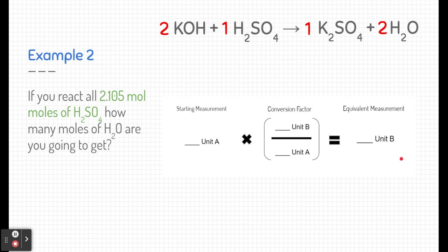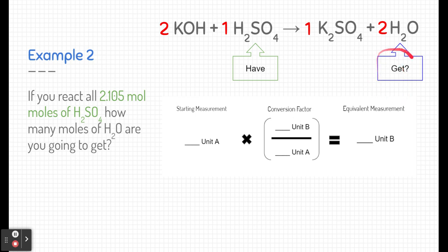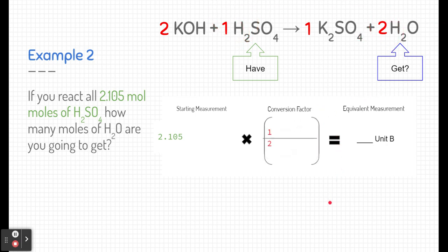Let's check out a second example problem. If you react all 2.105 moles of sulfuric acid, how many moles of water are we going to get? I'm going to show you this process again, but I'm going to do it incorrectly — in a way that I often see students do, which is a big mistake. I'll start by putting 2.105 as my starting amount, then use a conversion factor. I know it's a one-to-two ratio for sulfuric acid to water, so I plug that in. But this answer is incorrect — let me show you why.